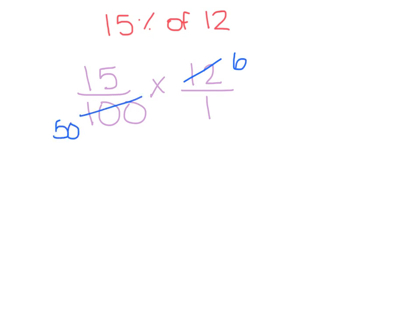So now we have 6 and 50, and we can actually divide again by 2. So 6 divided by 2 is 3, and 50 divided by 2 is 25. Since we can't simplify any further, we're going to multiply right across. 15 times 3 is 45, and 25 times 1 is 25.